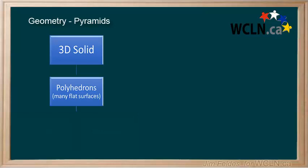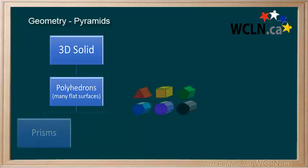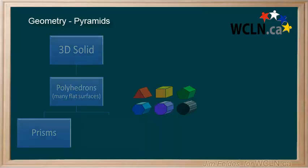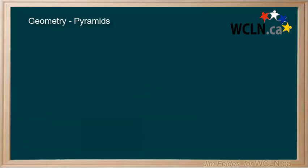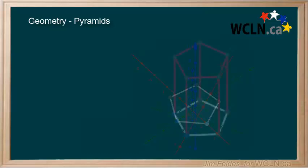In our last episode, we explored prisms as a subgroup of polyhedrons. Prisms can be generated quite quickly by taking a polygonal shape on a plane — like a regular pentagon — and adding lines to create 3D depth.